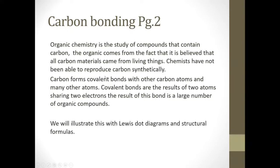We start out talking about carbon bonding. Organic chemistry is the study of compounds that contain carbon. The organic part comes from the fact that it's believed all carbon materials come from living things. Chemists have not been able to reproduce carbon synthetically. Carbon forms covalent bonds with other carbon atoms and many other atoms. Covalent bonds are the result of two atoms sharing electrons, and the result of this bonding is a large number of organic compounds.